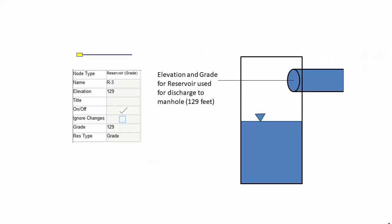To model a discharge to a manhole, typically a reservoir node is used. The input for the elevation of the reservoir is the centerline of the pipe discharging to the manhole, and the grade is equal to the elevation. This represents a discharge to atmospheric pressure.